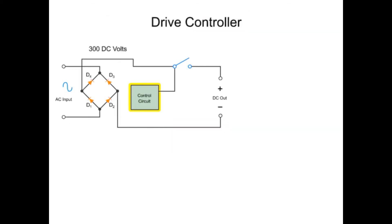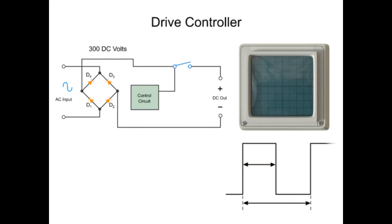The on and off cycling of the controller circuit produces a repeating 300 volt square wave with a fixed frequency and width, as illustrated by this typical output displayed on an oscilloscope.